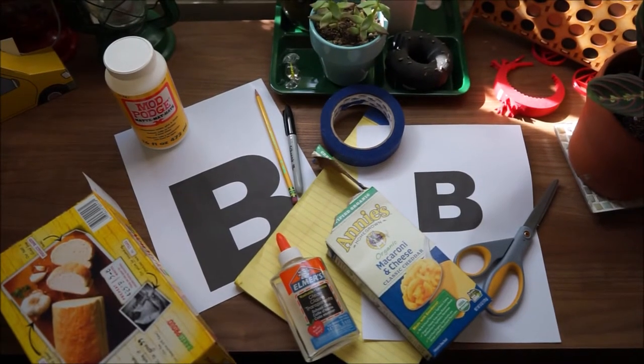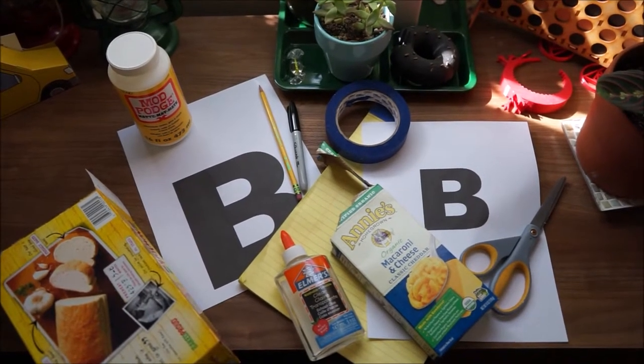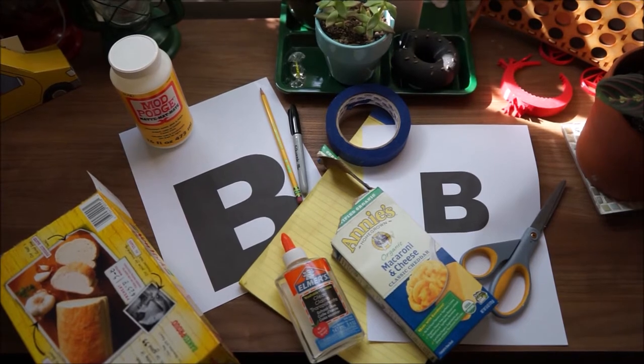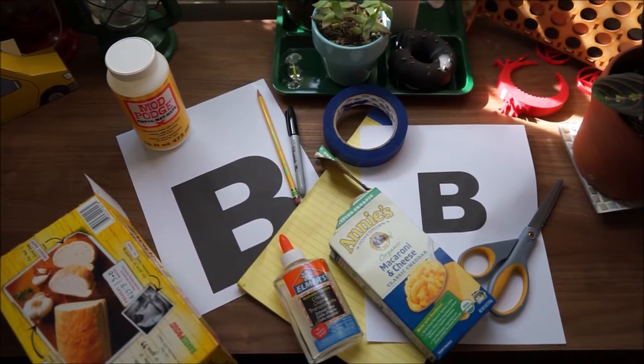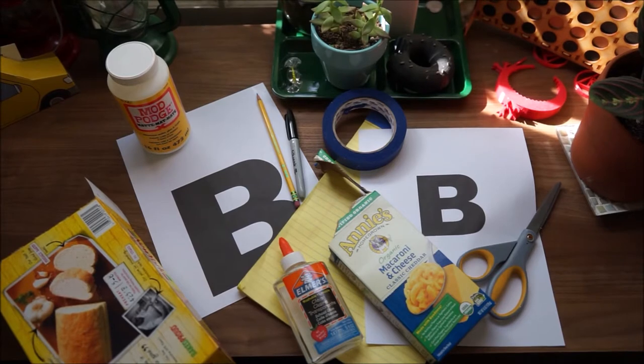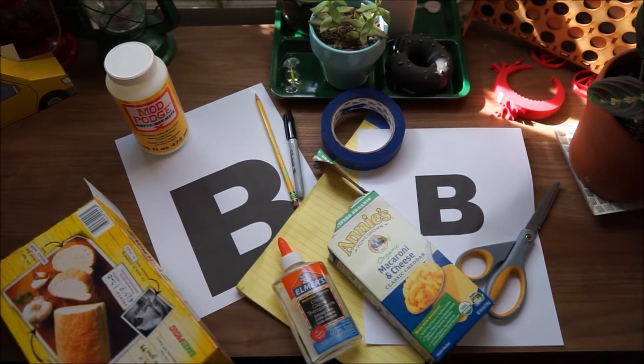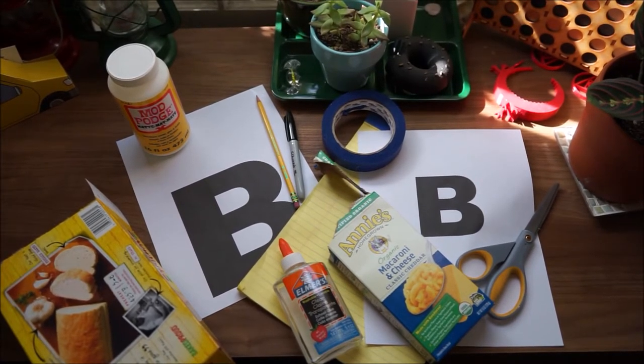The materials you will need to build your B are the printed off B's, some scissors (get permission first), some masking tape, some pencils, maybe permanent markers if you have them, but any marker or paint will do, some glue, regular glue, or a Mod Podge like paper mache glue would be best.